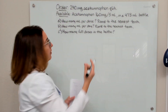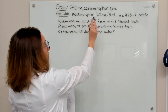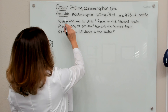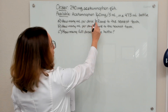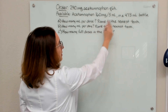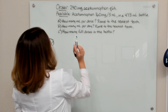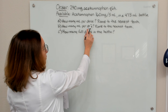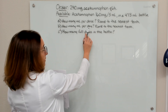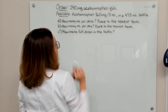In this example problem, we have an order for 240 milligrams of acetaminophen to be given Q6H, so every six hours. What we have available is acetaminophen 160 milligrams in 5 ml — that's our concentration — in a 473-milliliter bottle. We're asked: how many milliliters should we give per dose rounding to the nearest tenth, how many milliliters per day rounding to the nearest tenth, and how many full doses are in the bottle?